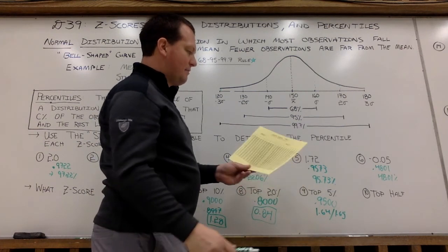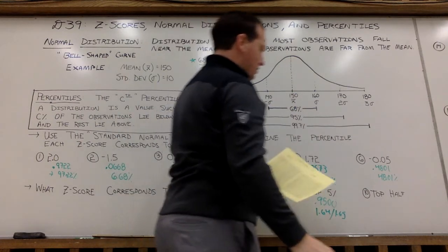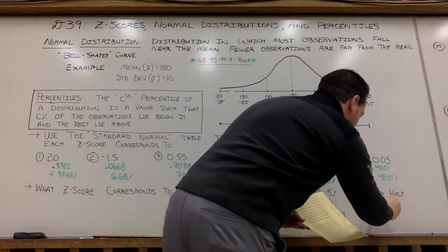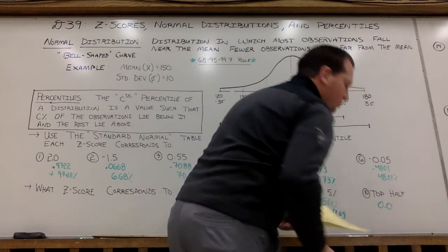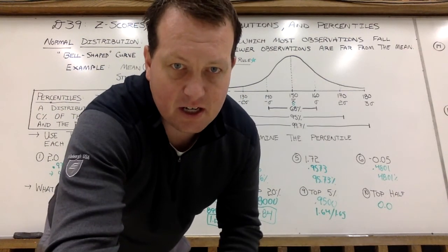And then top half, if you're in the top half, you're going to be right in the middle. So your z-score would be a 0 average. So 0.0 would be your z-score. Have a little fun with your table here. We'll see you soon.